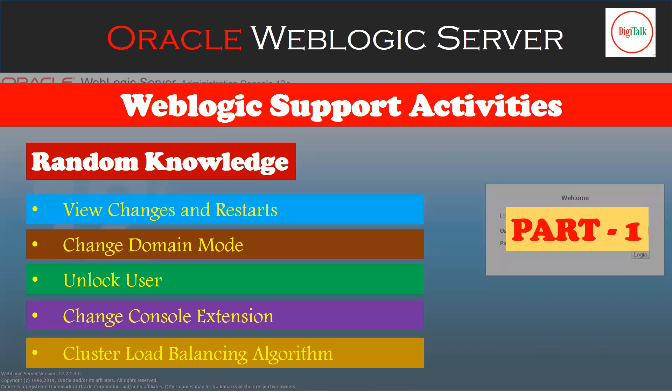In Part 1, I am going to cover View Changes and Restarts. We all know when we do some changes from the admin console we have a Lock and Edit button, then we activate the changes. But what happens in between — if changes are in a pending state, where exactly are the configurations stored? What changes require a restart? How can we verify if a restart is needed, change the domain mode, unlock a user account, change the console extension context, and discuss cluster load balancing algorithms?